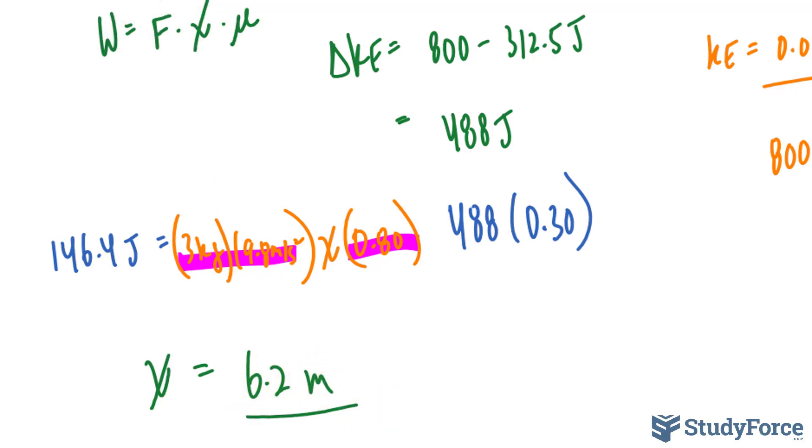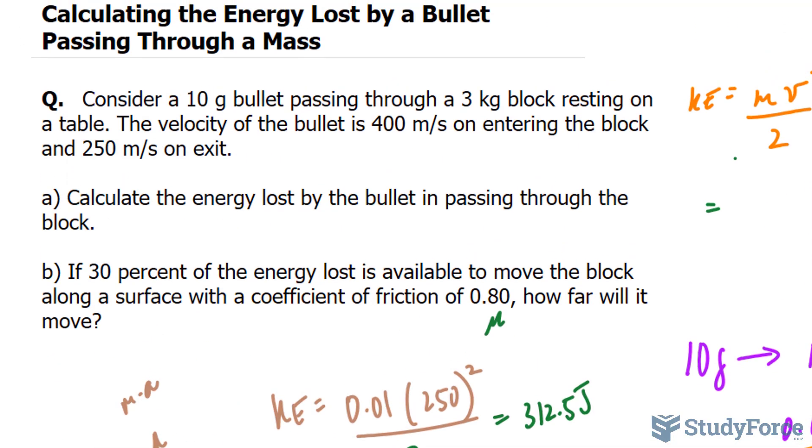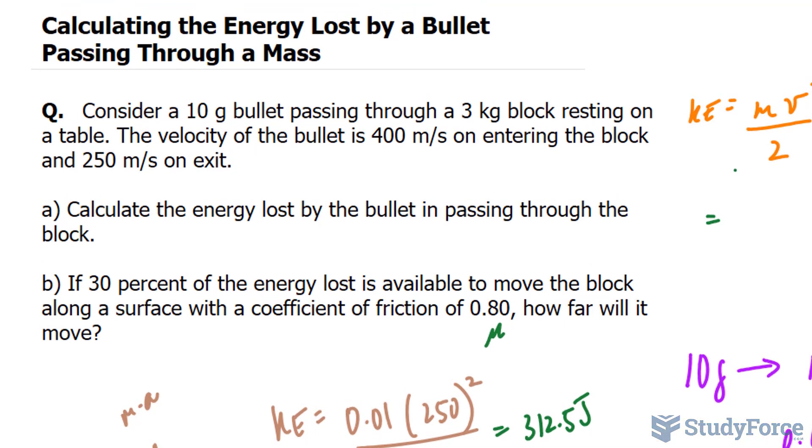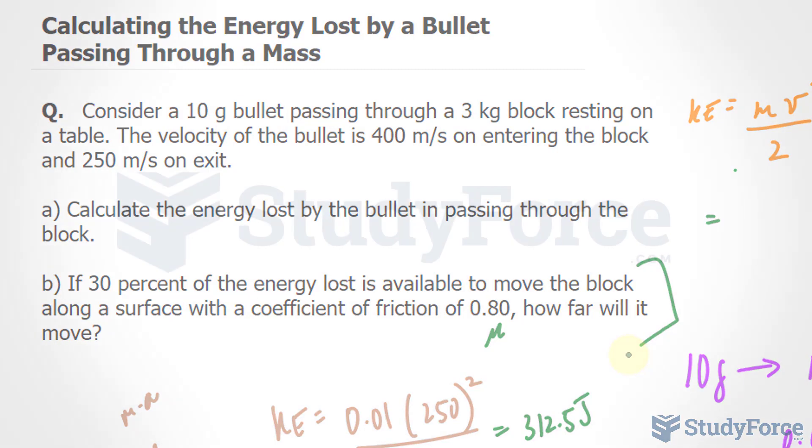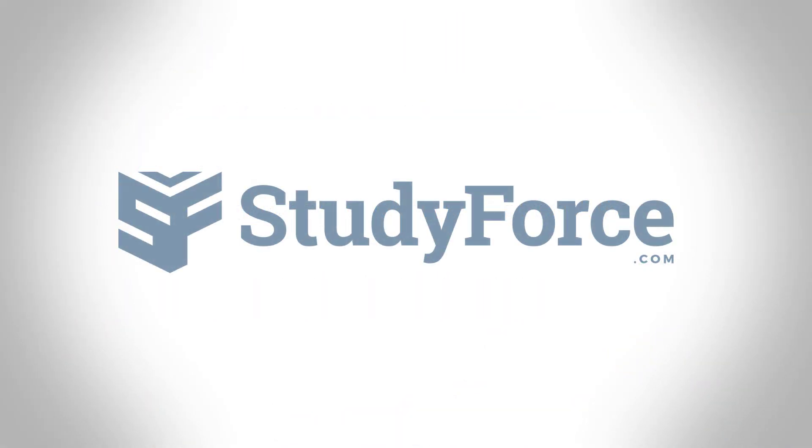6.2 meters is how far this mass will move given the parameters discussed here. And there you have it. That is how to calculate the energy lost by a bullet passing through a mass.